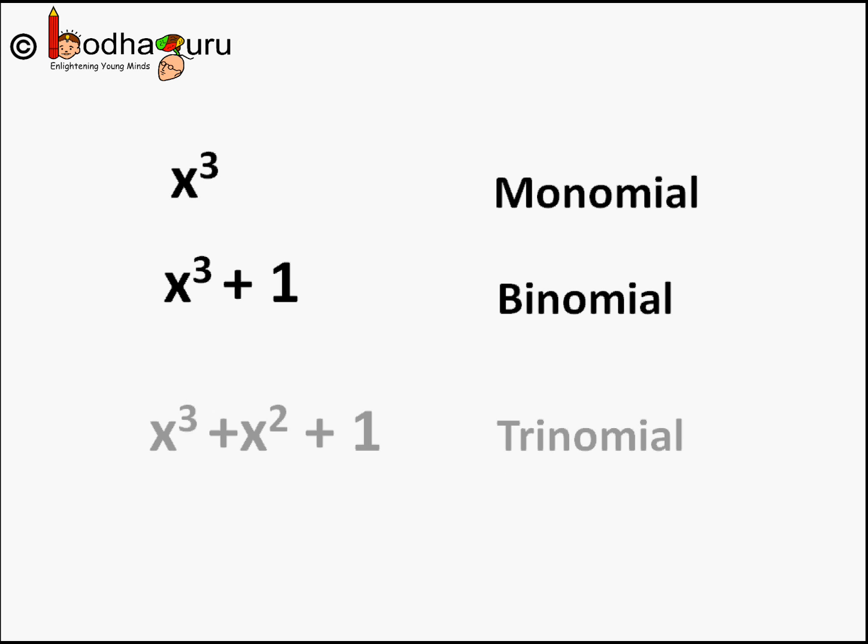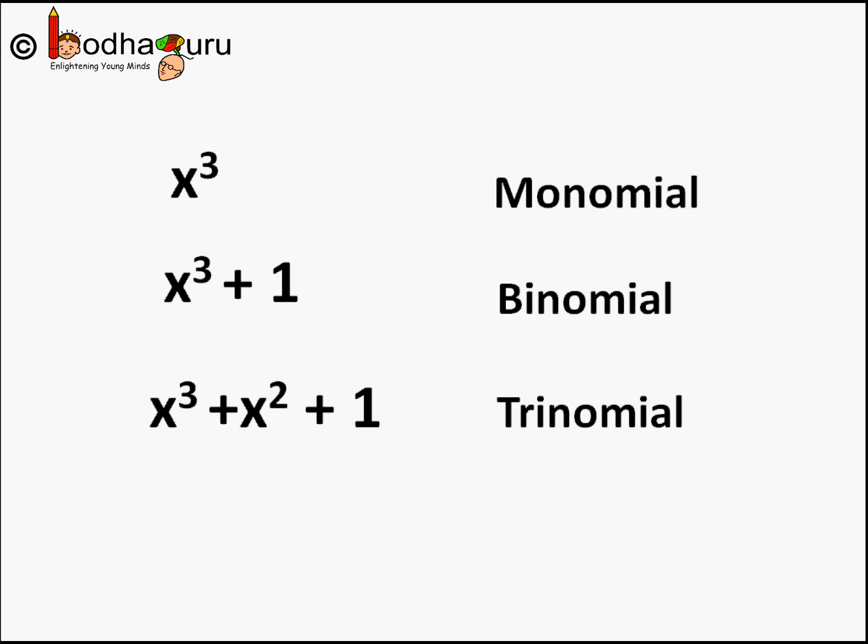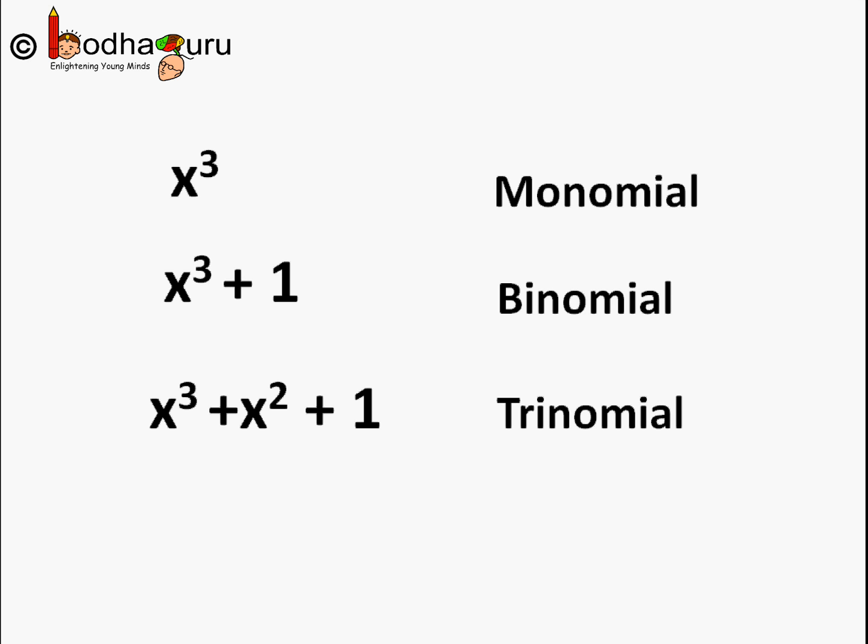A polynomial with three terms is called a trinomial — 'tri' means three — like x cubed plus x squared plus 1. We will learn more about polynomials in the next video. Till then, bye bye!